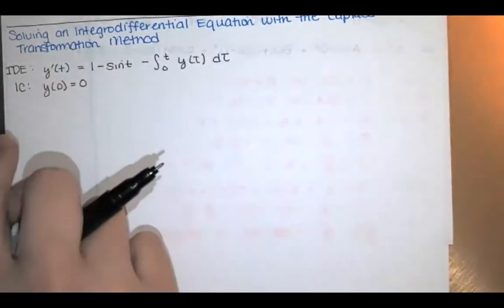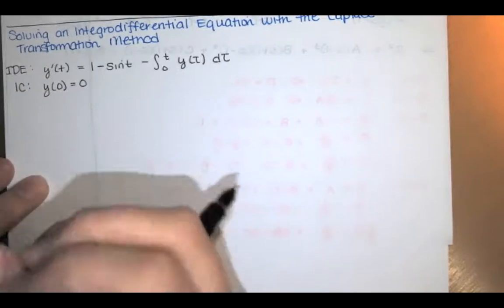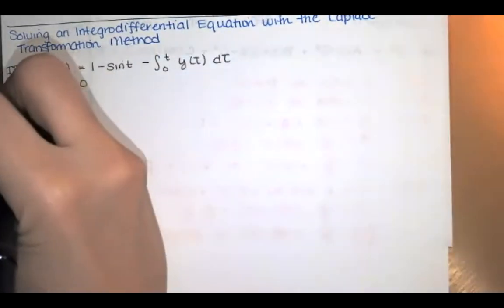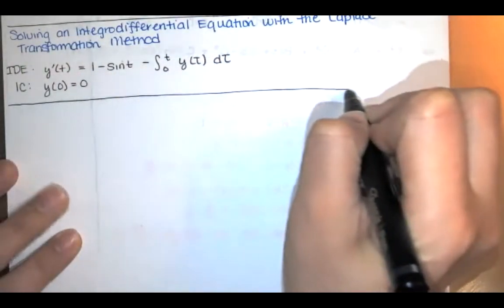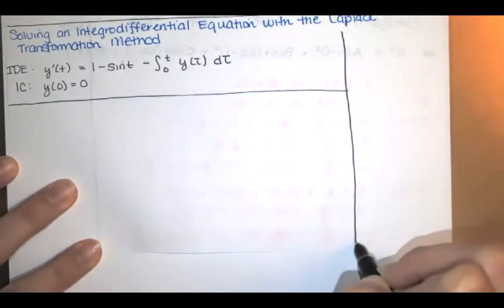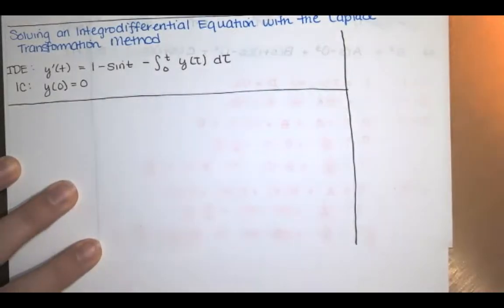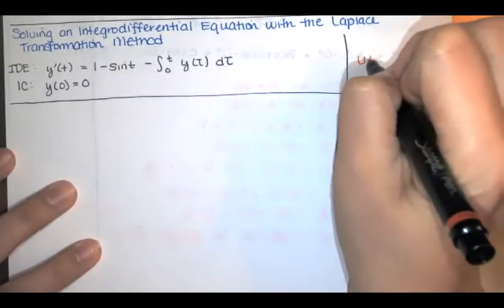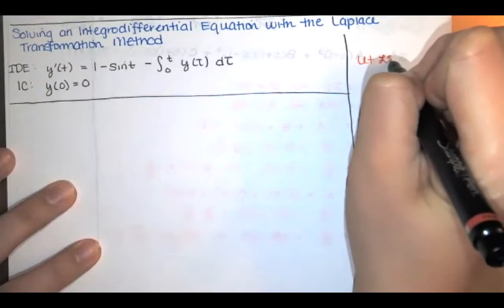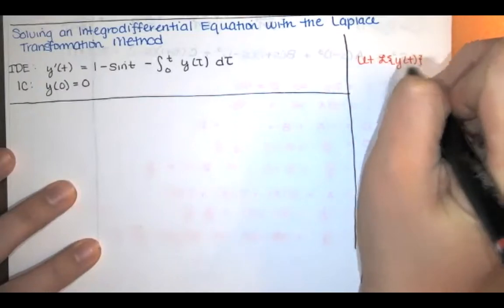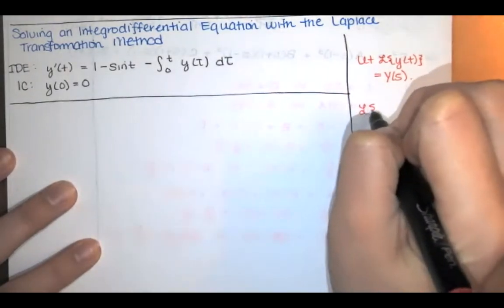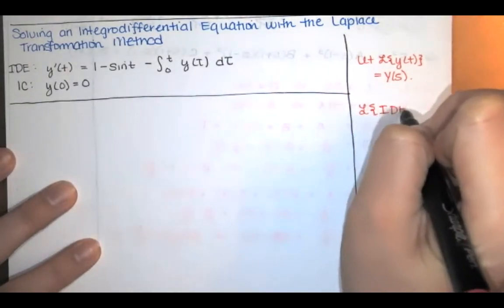In order to find y, we can use the Laplace transformation method and what we know about the Laplace transform of a convolution. It actually starts in a very similar way to how we typically solve an initial value problem with the Laplace transformation method. We let the Laplace transform of little y equal big Y, then we compute the Laplace transform of the integral differential equation.